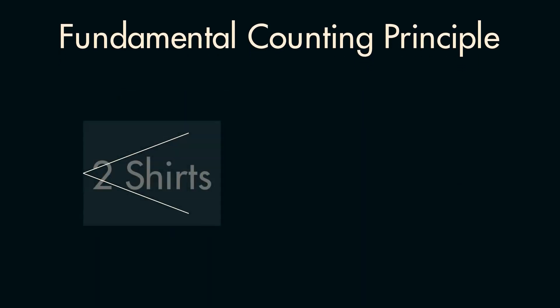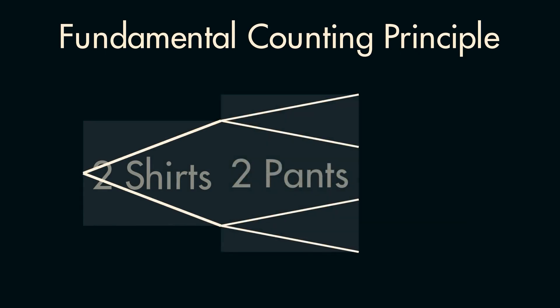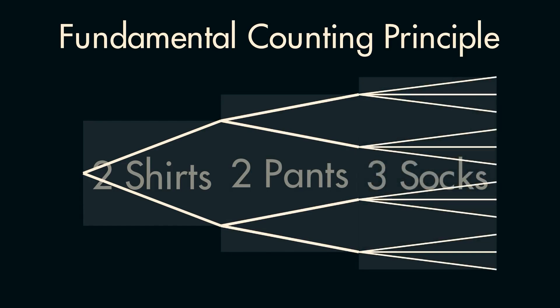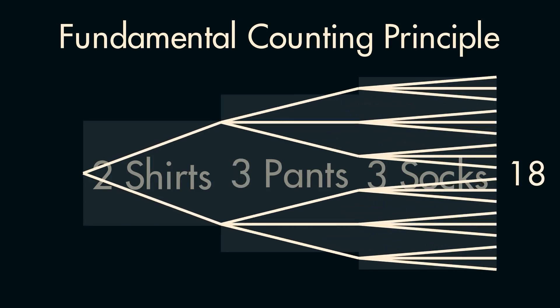To get a quick intuition of why this works, let's draw the situation out with a tree diagram. First, we have two branches depending on which shirt we select. Next, the end of each of those branches gets split into two more branches, representing our two choices in pants. And finally, those branches each get split into three, representing which pair of socks we settle on. From here, we can see if we add another pair of pants to our choices, then we get another six outfits, just like what would happen if we multiplied by three instead of two.